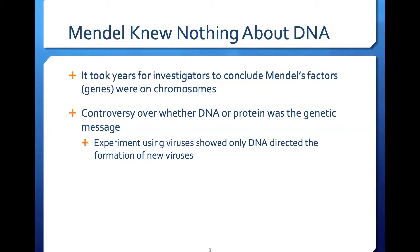To start off with, we talked a lot about Mendelian genetics last week. It's important to understand that Mendel actually knew nothing about DNA, the molecule, or how it worked. It took years for investigators to conclude that Mendel's factors, or what we call genes now, were on actual chromosomes. There was a lot of controversy over whether DNA or protein was the actual genetic material — the material that saved information from generation to generation. Some of the first experiments involving this idea used viruses.